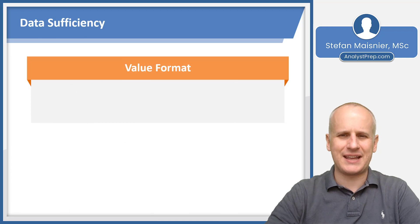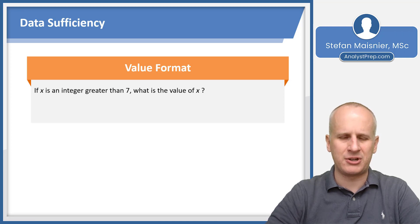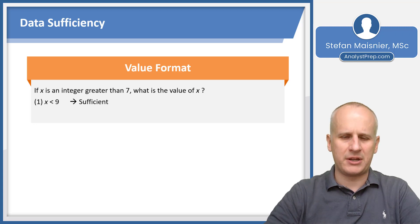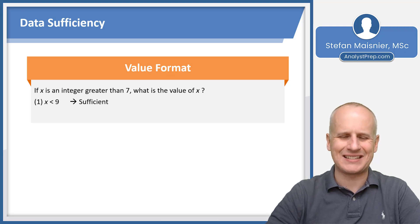Let's start by seeing a very simple sample value format data sufficiency, such as: if x is an integer greater than seven, what is the value of x? The task of the data sufficiency is to determine if there's only one possible value from the information in the conditions. So our first condition states that x is less than nine. The given information said x is an integer greater than seven, so the first integer greater than seven would be eight, and eight is less than nine and is the only integer less than nine.